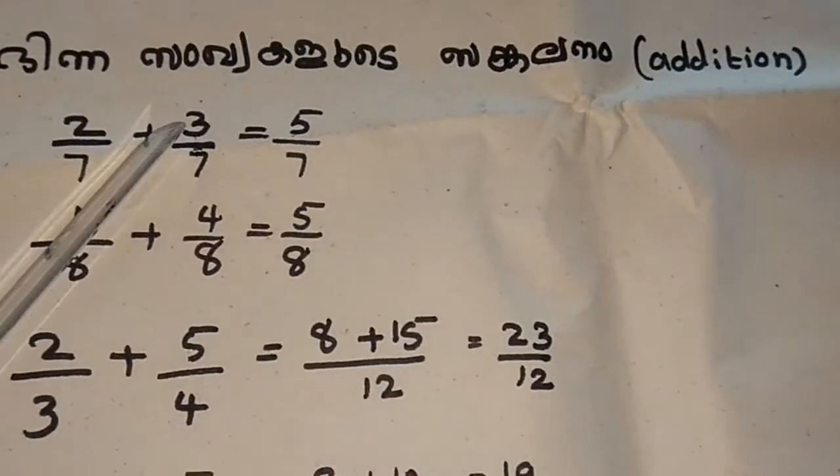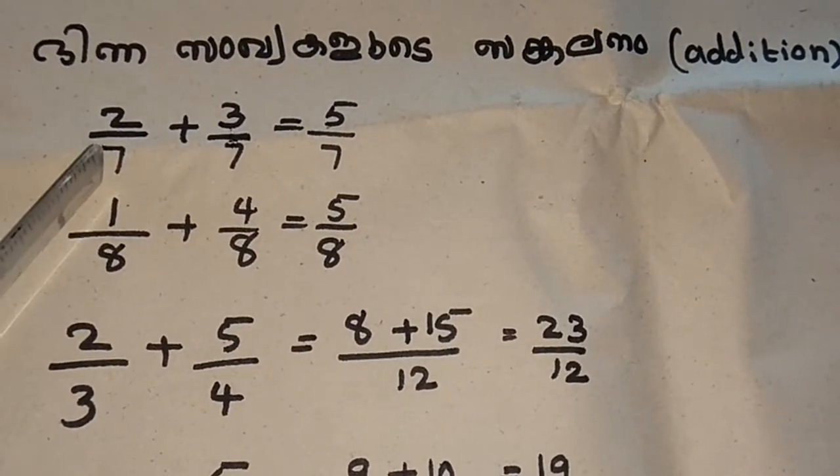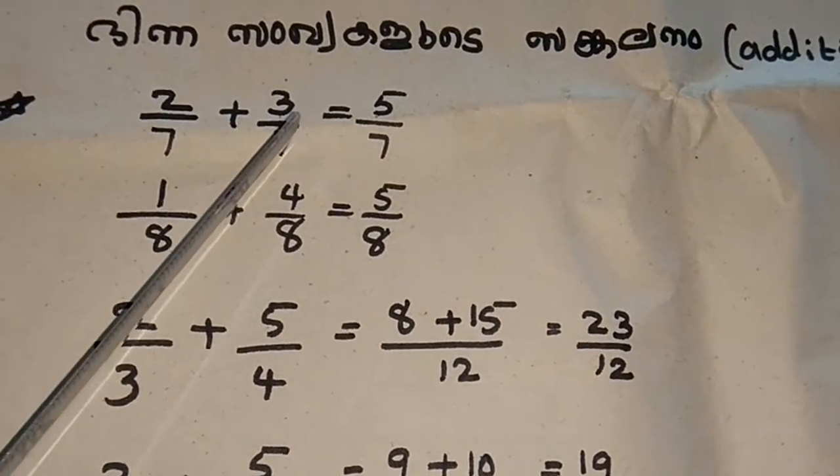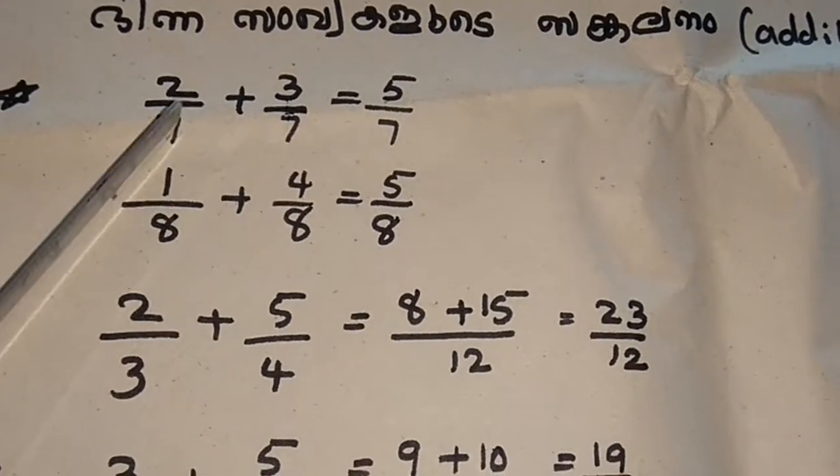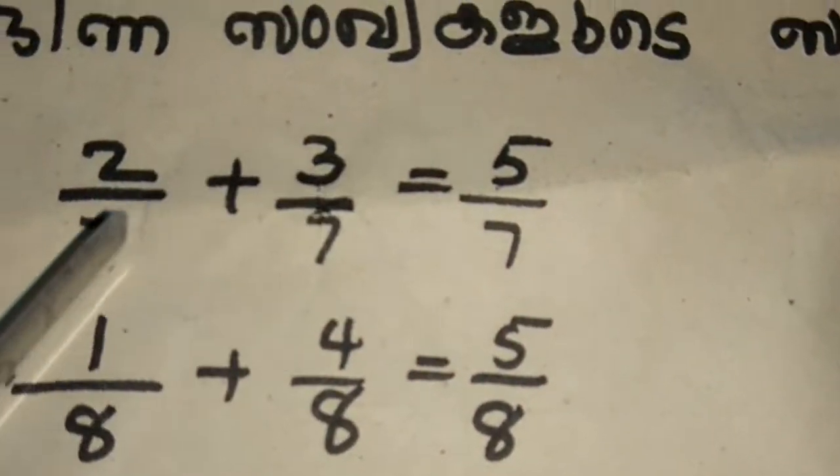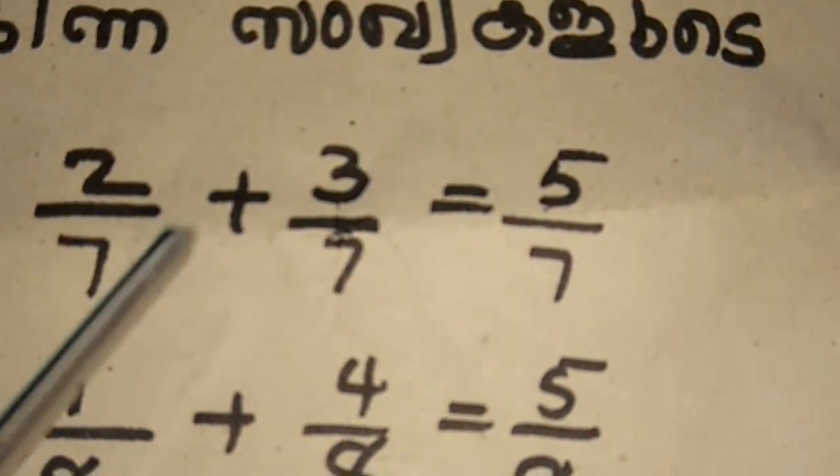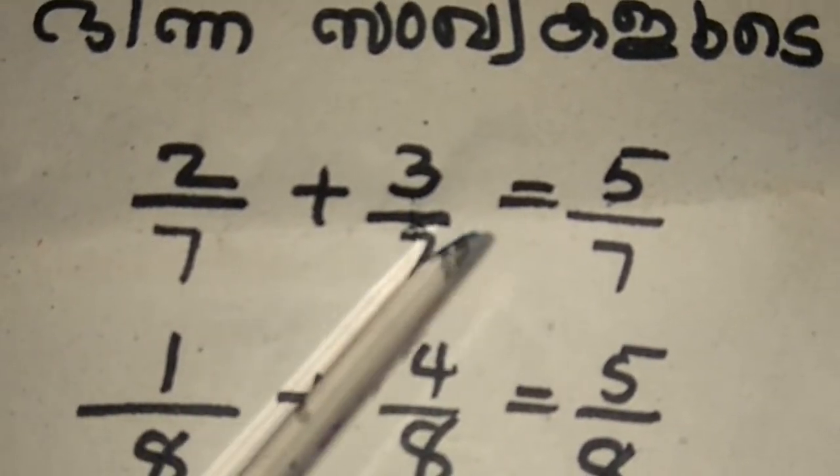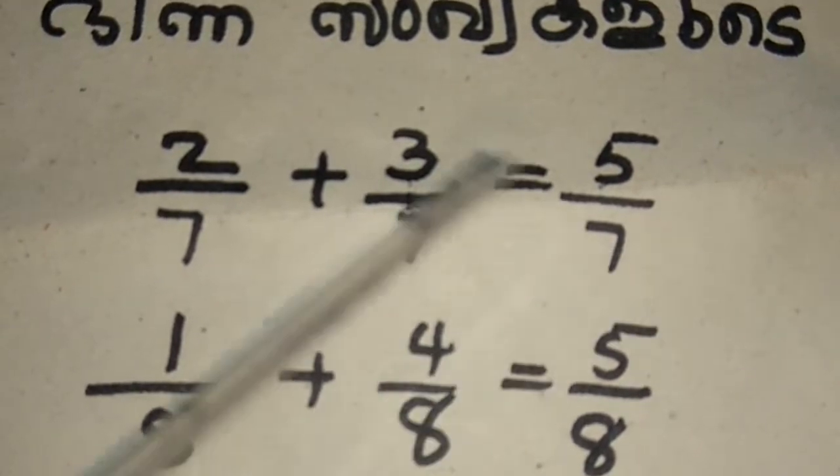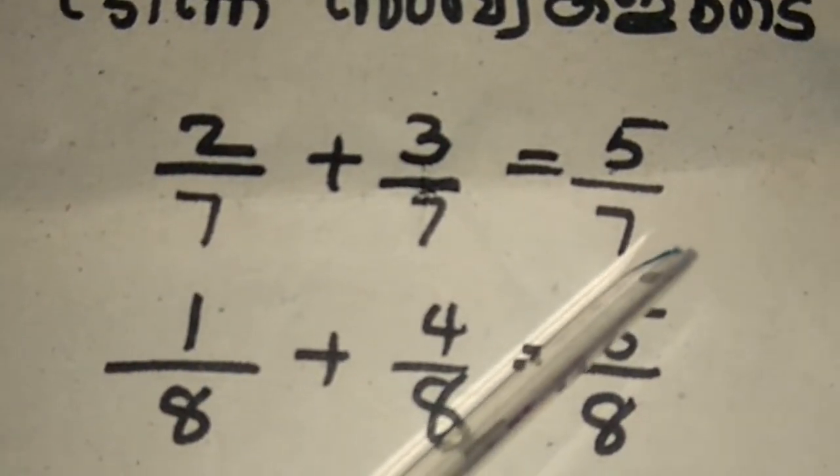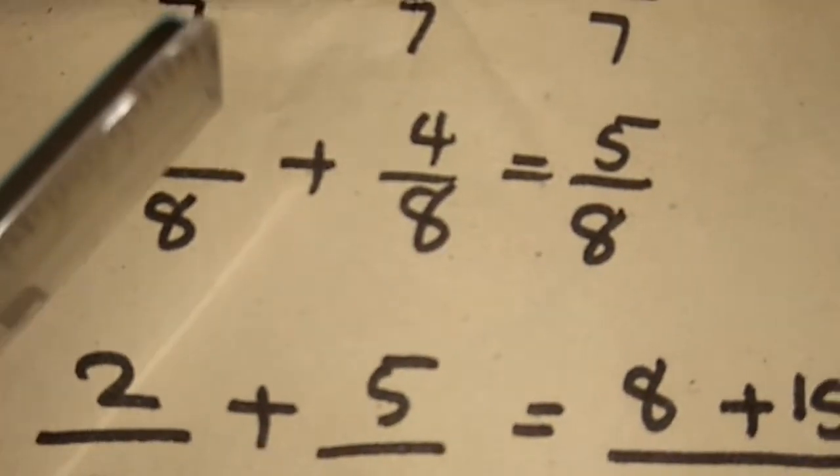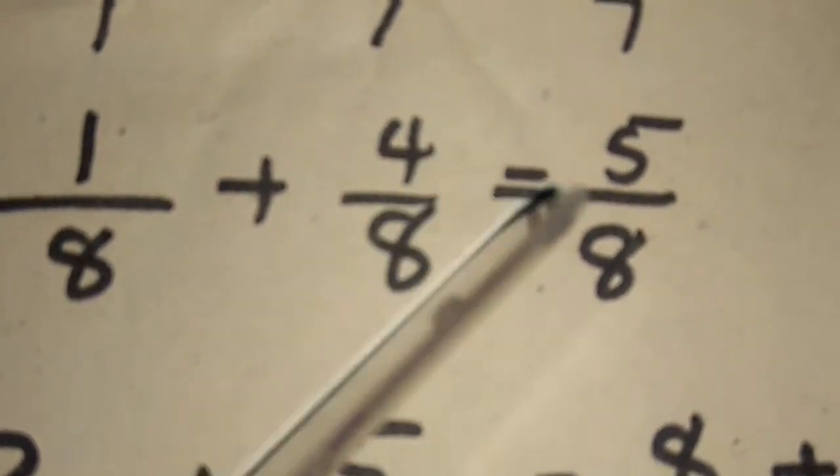Addition of fraction. Two by seven plus three by seven. The sum of two fractions have the same denominator. Two by seven plus three by seven equals five by seven. Sum of numerator by same denominator. Similarly, 1 by 8 plus 4 by 8 is equal to 5 by 8.